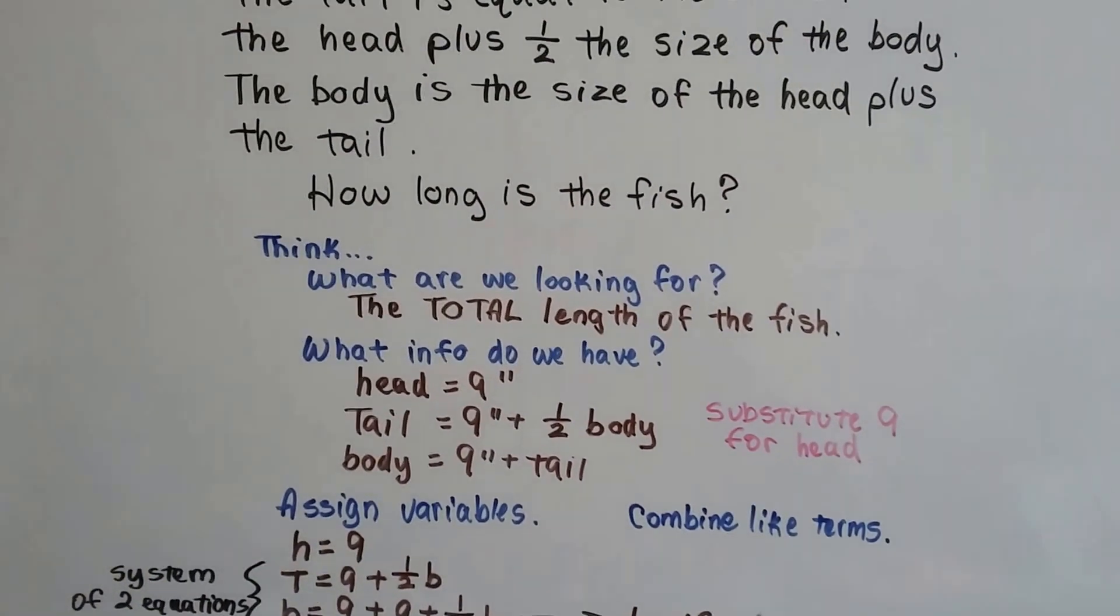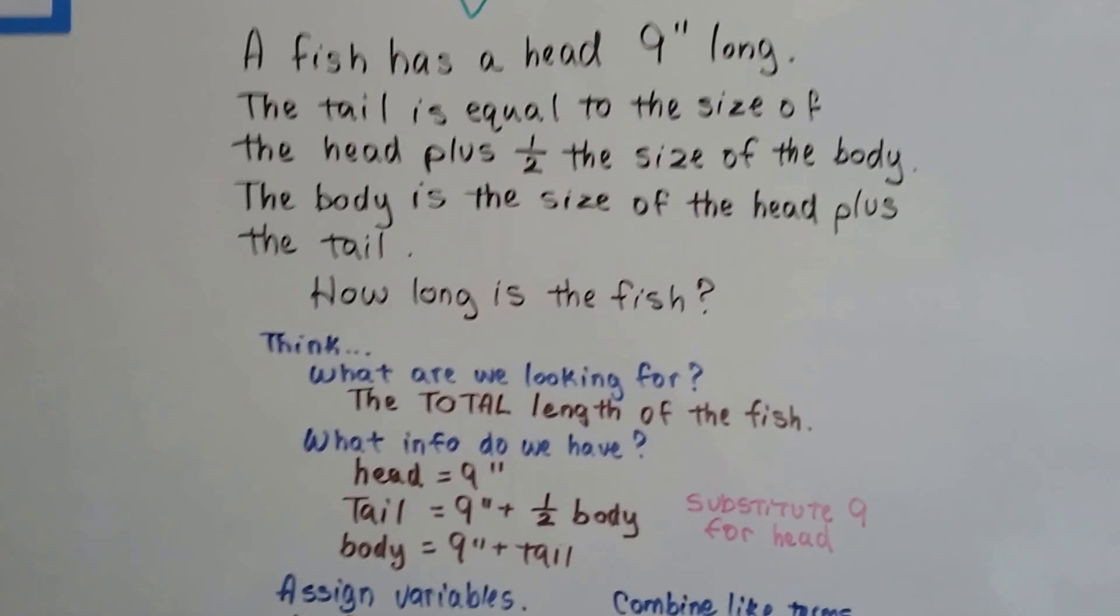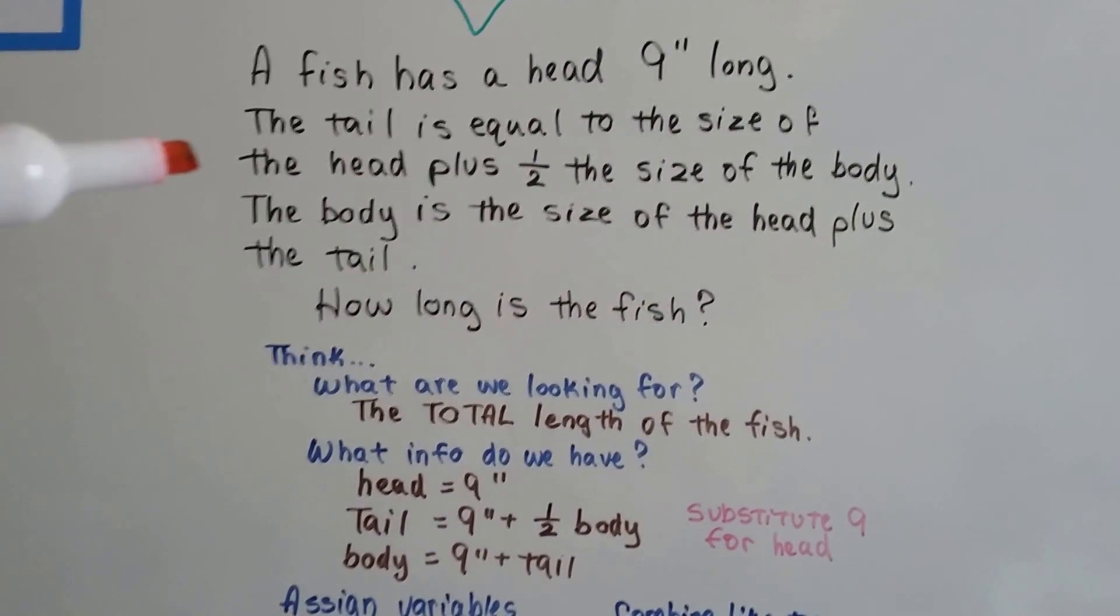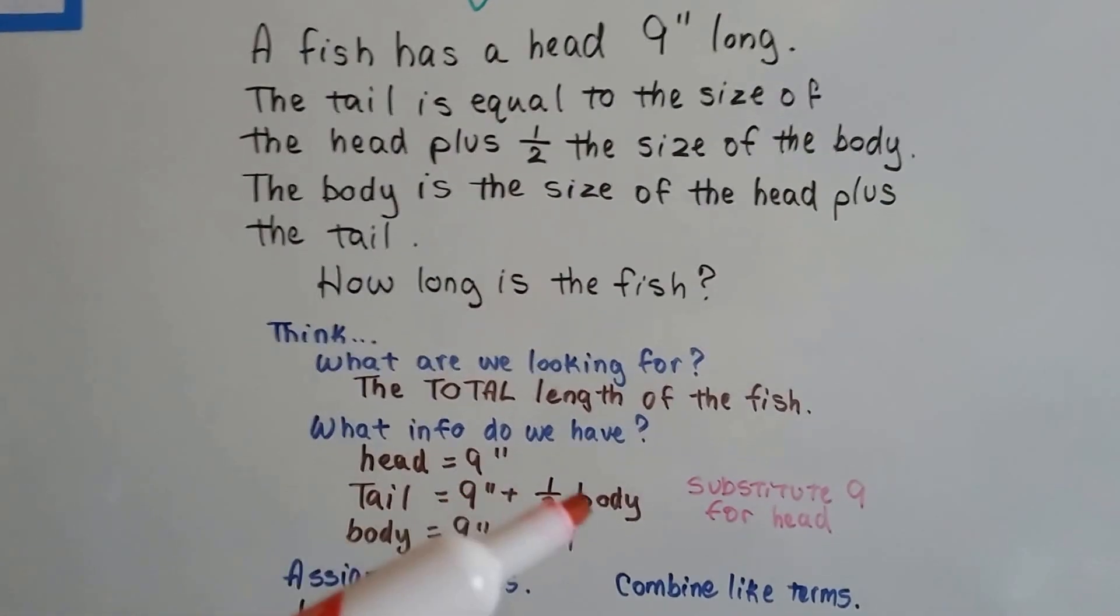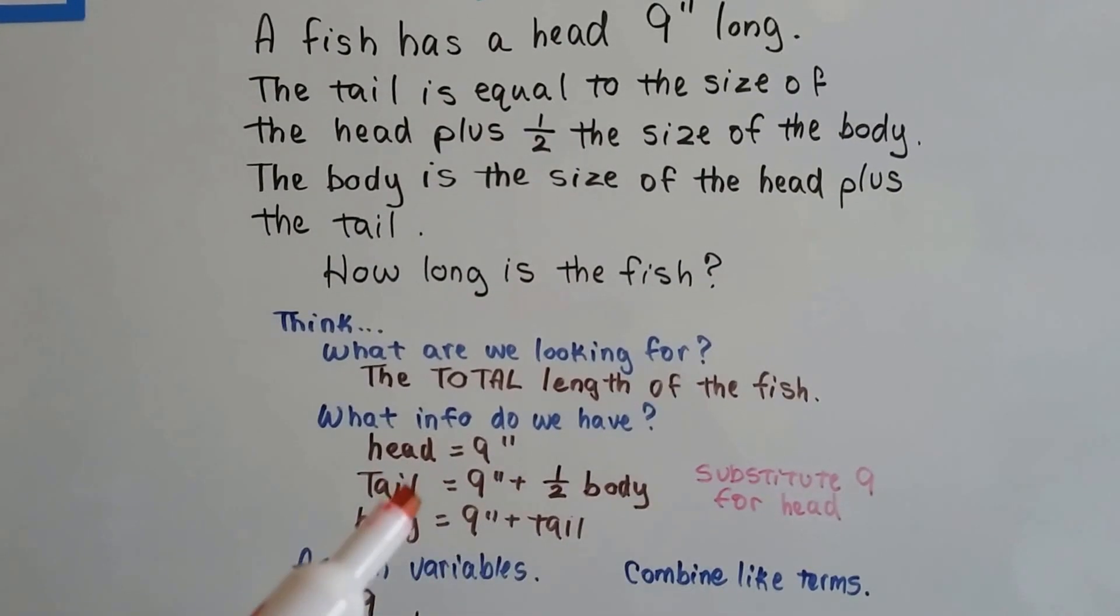Well, we know that the head is nine inches. We know that the tail is the head plus half the body. So if the head is nine inches, that means we have nine inches plus half the body. We're going to substitute that nine in for the head.